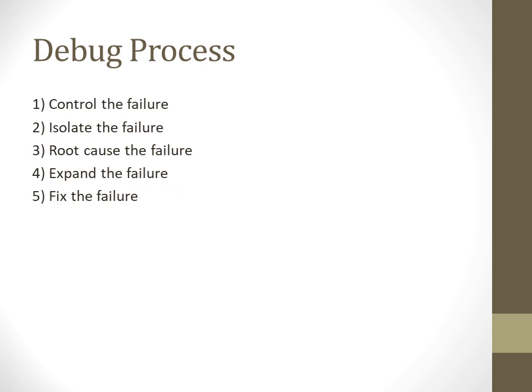The debugging process starts with a detailed plan that must characterize and validate both the functional and electrical properties of a design. When the design becomes complex, the debugging process also becomes complex. There are five major steps in debugging a particular failure. The first step is controlling the failure, which means determining the sensitivity of the failure through experimentation.